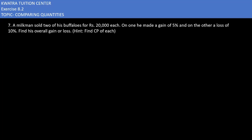Question 7 says a milkman sold two of his buffaloes for Rs. 20,000 each. That means the selling price of one buffalo is 20,000. On one he made a gain of 5% and on the other a loss of 10%. So we need to find the cost price of both.